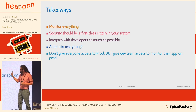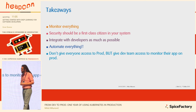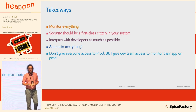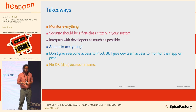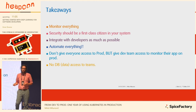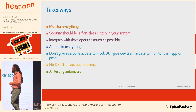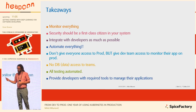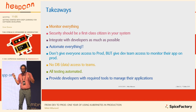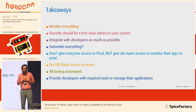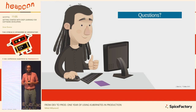Give access to other environments, but to production definitely not. Regarding production environments, provide the tools to developers so they can do it themselves — this is quite important. No database access to teams whatsoever — that goes without saying in 2019. We need to make all testing automated. And the last takeaway: provide developers with the required tools to manage their applications so that they don't bug you.